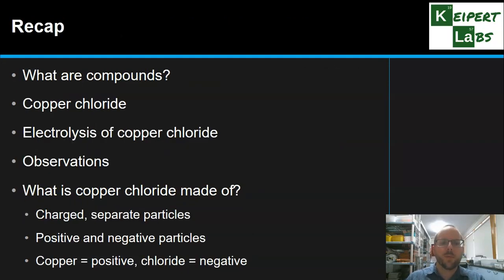So, just to recap, we looked at what are compounds. We focused on copper chloride as made up of copper and chlorine atoms bonded together in a certain way but can be dissolved in water. We saw what happens when we pass electricity through it. We see a chemical change on each side. Copper metal on one side, chlorine gas on the other, which helps us to identify that copper chloride is made up of charged, separate particles. We have positive and negatively charged particles. Copper is positive and chloride is negative.